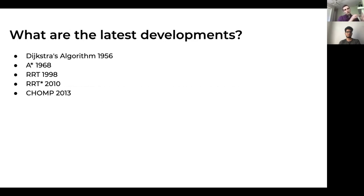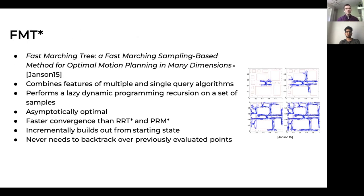To give a timeline perspective: Dijkstra's algorithm was in 1956, A* in 1968, RRT in 1998, RRT* in 2010, and CHOMP in 2013. The first algorithm we'll discuss from that point on is FMT*, which stands for Fast Marching Tree. It combines the benefits of multiple and single query algorithms — it takes a batch of samples in continuous space and searches that graph using lazy dynamic programming, leading to an asymptotically optimal solution that is faster than RRT* and PRM*.